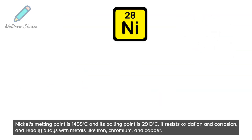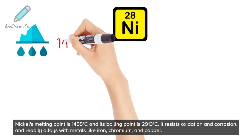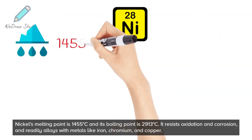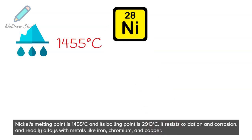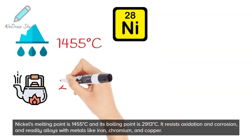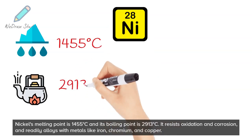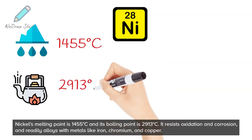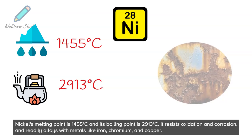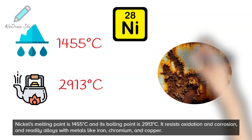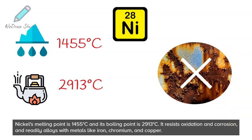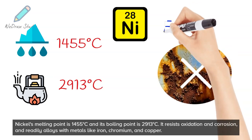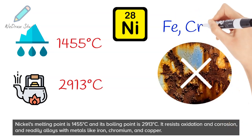Nickel's melting point is 1,455 degrees Celsius and its boiling point is 2,913 degrees Celsius. It resists oxidation and corrosion, and readily alloys with metals like iron, chromium, and copper.